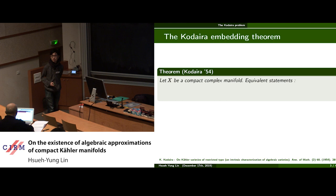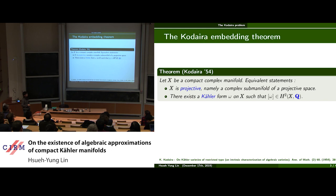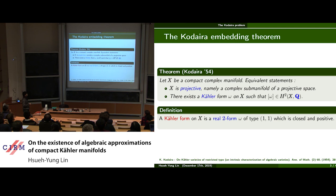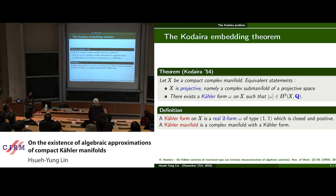Let's start with the Kodaira embedding theorem. The theorem says that given a compact complex manifold X, there are two equivalent statements. The first one is X is projective, namely it can be holomorphically embedded into a projective space. The second one is X has a Kähler form whose cohomology class is rational. Here a Kähler form on X is a real two-form of type (1,1) which is closed and positive. A Kähler manifold is a complex manifold with a Kähler form, so from the perspective of the Kodaira embedding theorem, a compact Kähler manifold can be regarded as a natural generalization of projective manifolds.